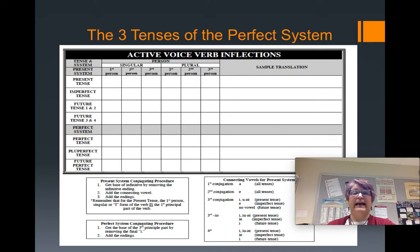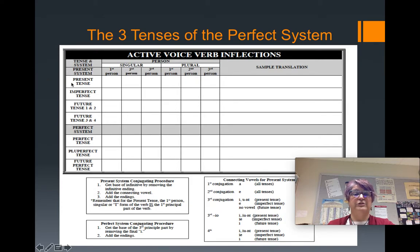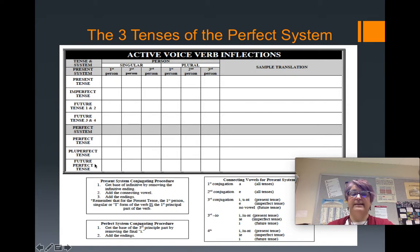When you are looking at the chart, you want to notice that it can be divided into two systems. We have the present system, which we have already learned about in first-year Latin, with the present tense, the imperfect tense, and the future tense. And then starting with the gray line across the middle of the chart, we have the perfect system, which is comprised of the perfect, the pluperfect, and the future perfect tense. Make sure you know which tenses belong to which system.